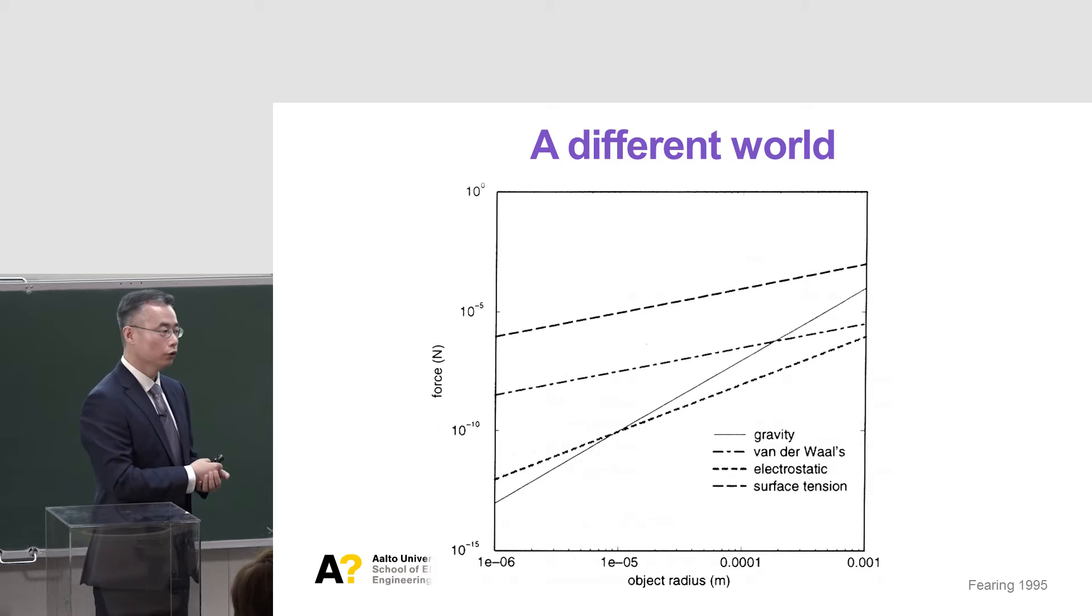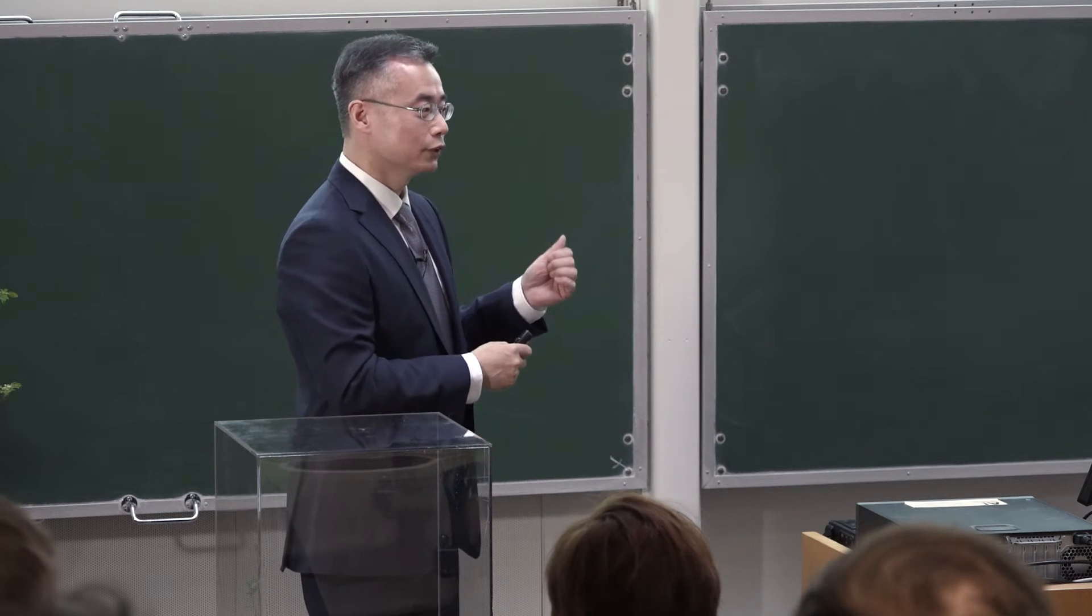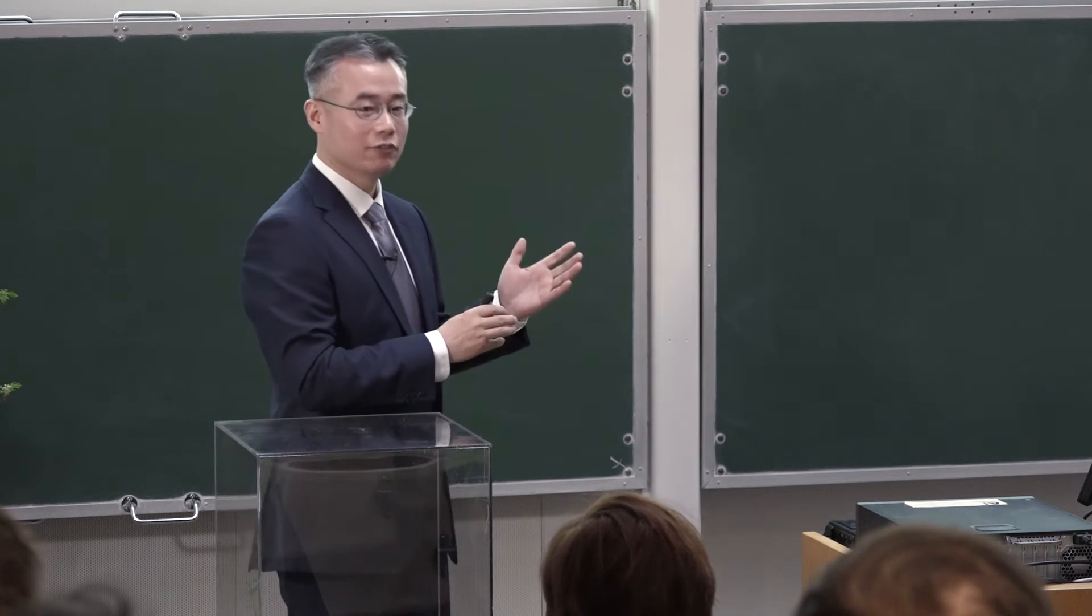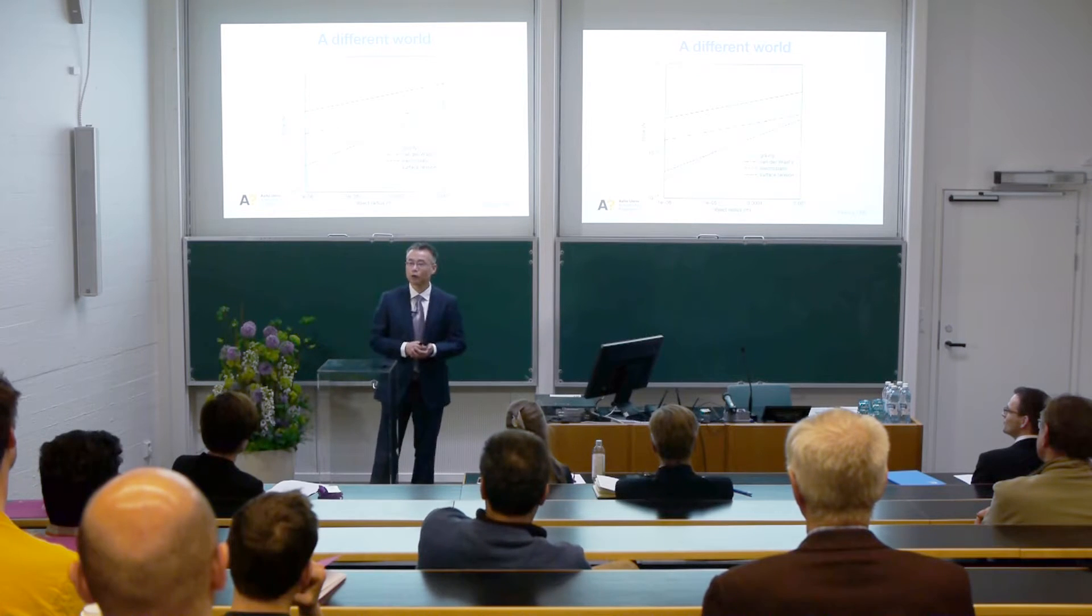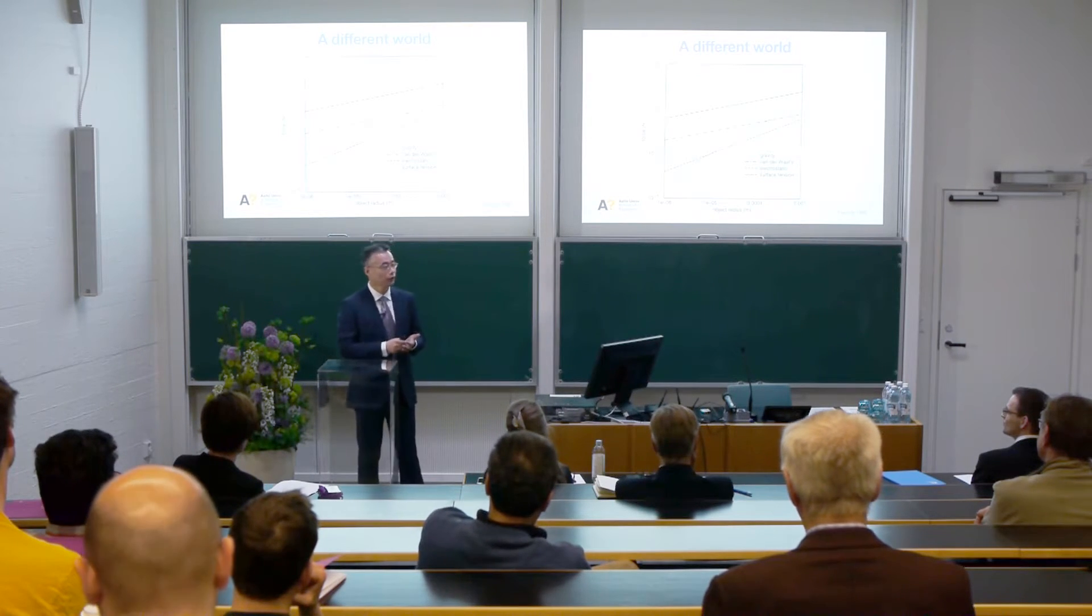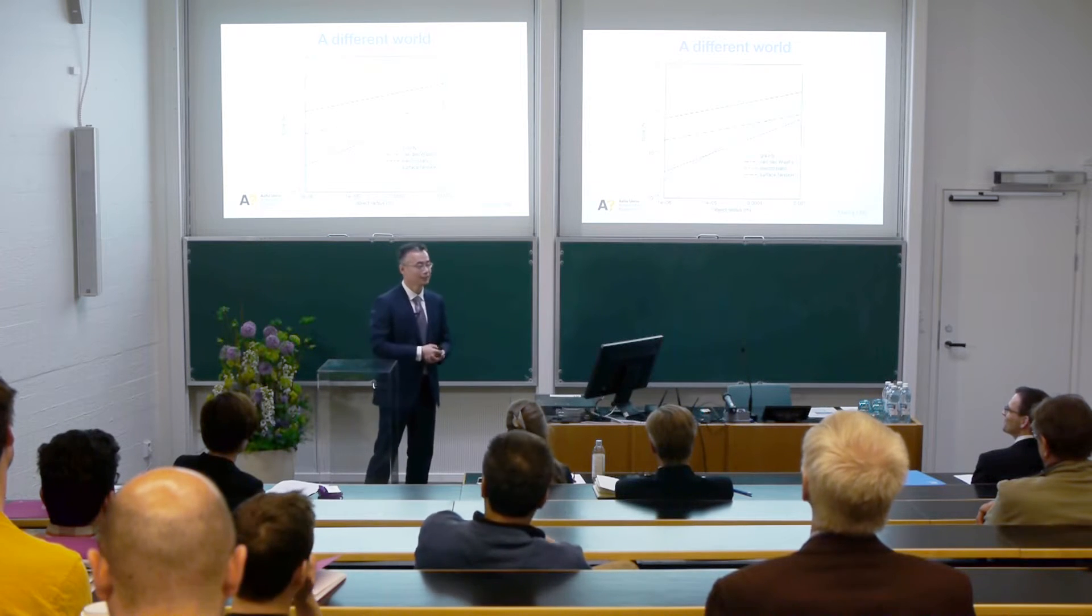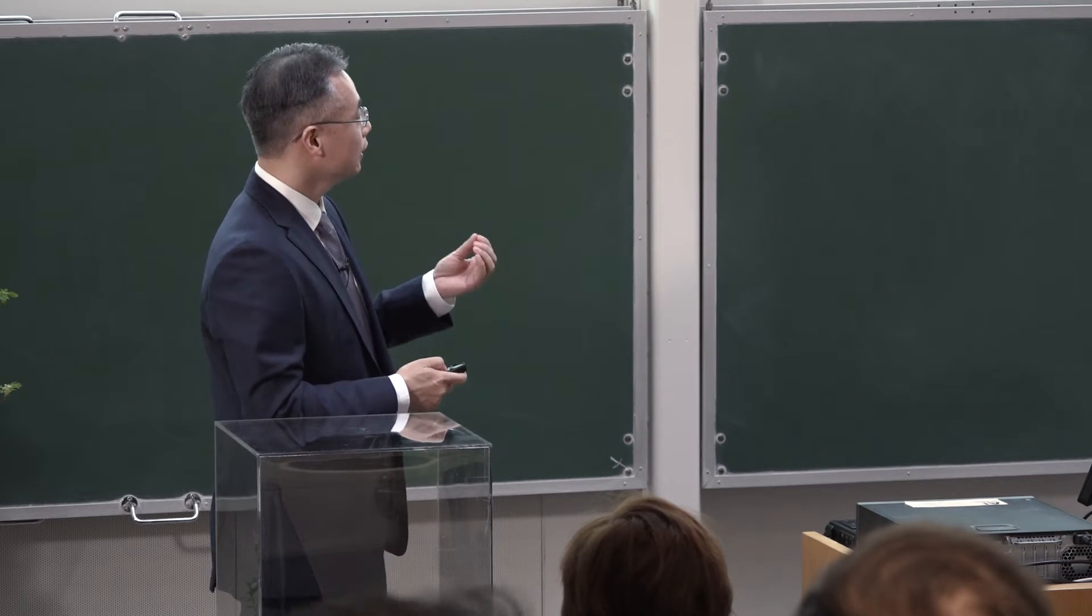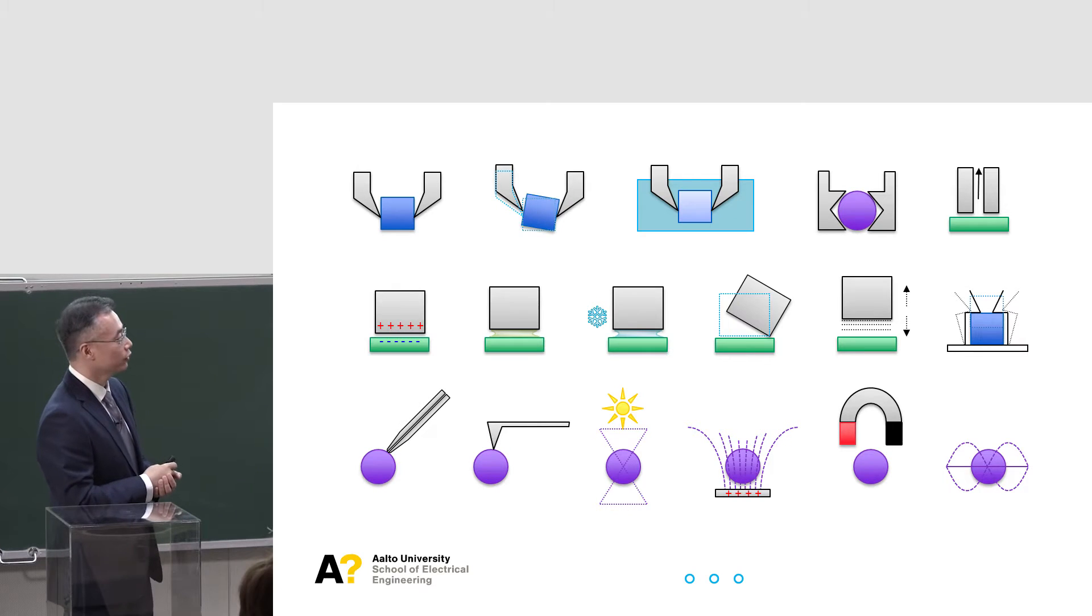Therefore, we can ignore it. At the micro world, it is also a micro-gravitational world. Even more, there is no inertia. In microgravity, you have inertia, but we don't have inertia. Therefore, as a robotician, we have to study quite a bit of physics to understand what's really going on at this scale. By studying all this physics, we are finally dealing with the problem quite differently.